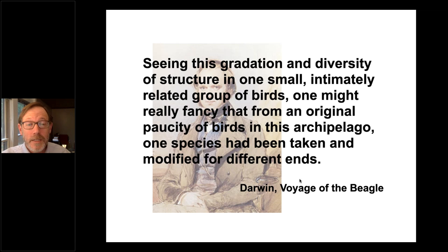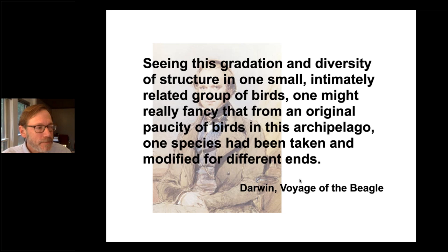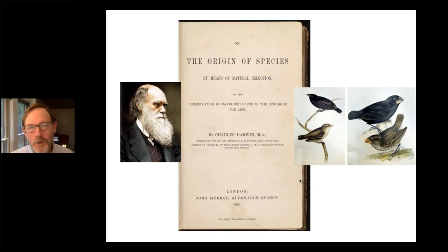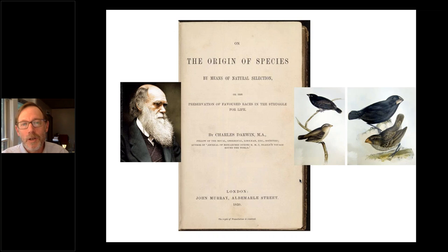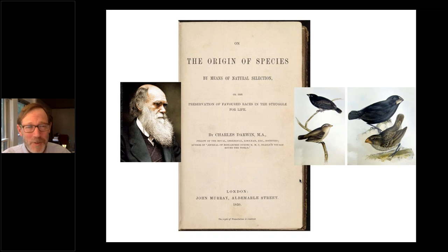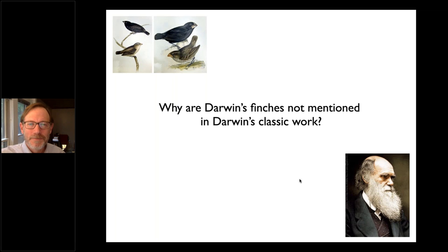Eventually Darwin understood it — years later in 'The Voyage of the Beagle' he wrote about seeing this gradation and diversity of structure in one small intimately related group of birds, and how one species might have been taken and modified for different ends. But here's my question to you: if you open the pages of The Origin of Species, with its 13 or 14 chapters, there's no section on the finches. No chapter on the finches, no section of a chapter, no paragraph on the finches — finches are not even mentioned. If this is such a great example of evolution and Darwin recognized their importance, why are Darwin's finches not in The Origin of Species?